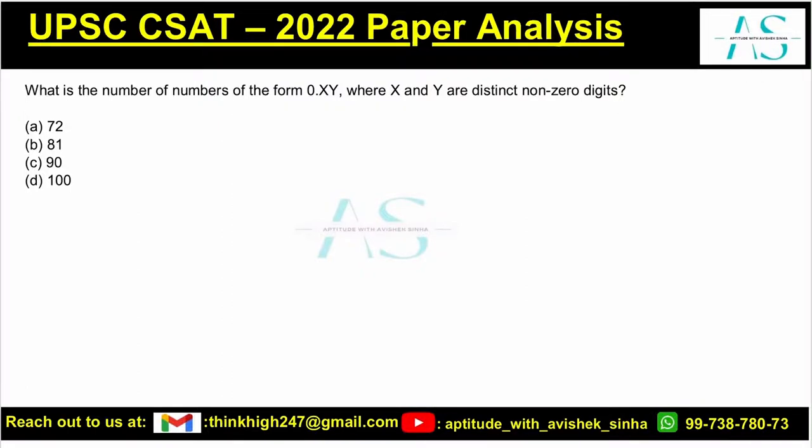What is the number of numbers of the form 0.xy where x and y are distinct non-zero digits? Distinct means different, non-zero means they can be from one to nine.